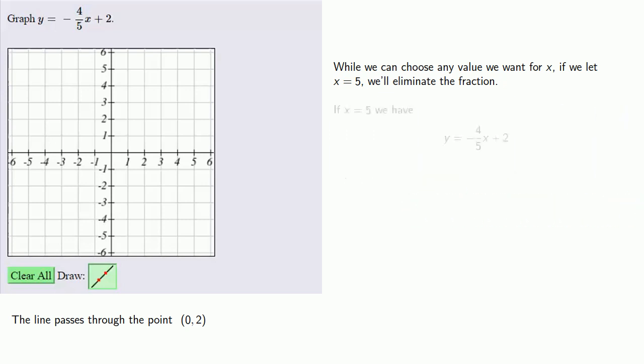So if x equals 5, we find that y equals minus 4 fifths x plus 2. And so y will be negative 2. And so the point (5, negative 2) is also on the line. And so our line passes through the points (0, 2) and (5, negative 2).